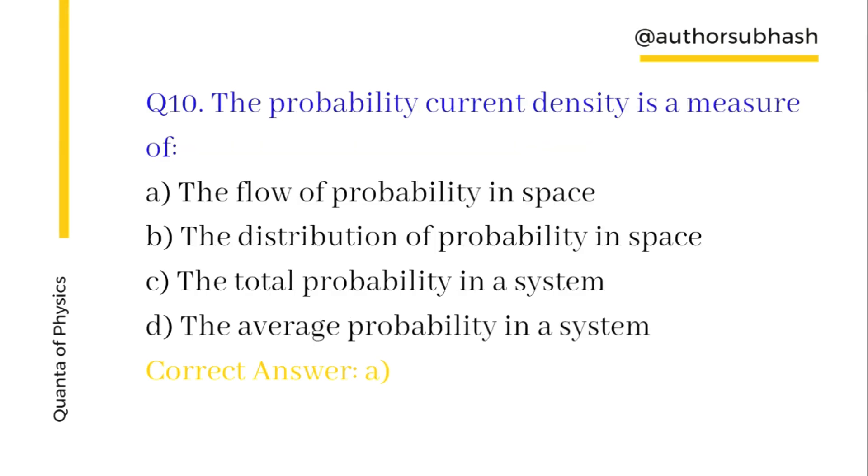Question number ten: The probability current density is a measure of the flow of probability in space.